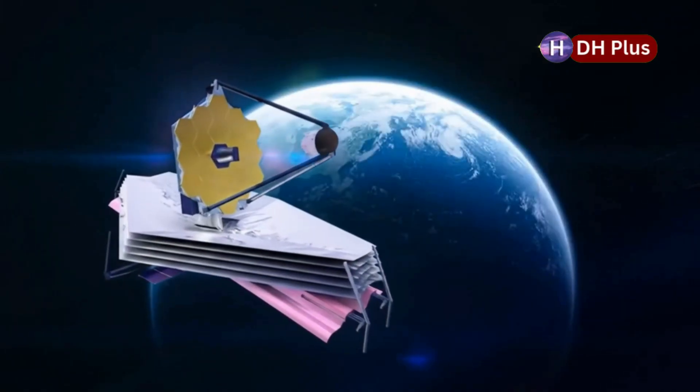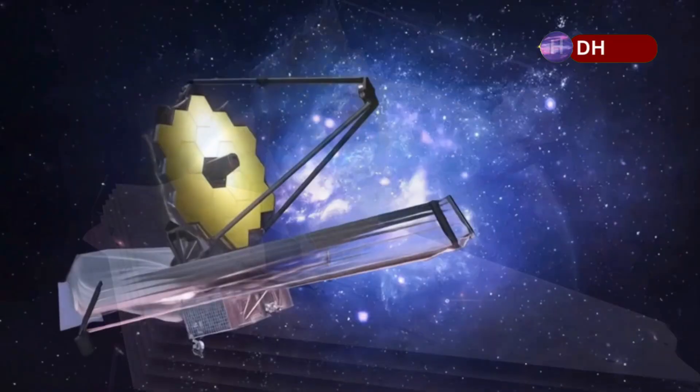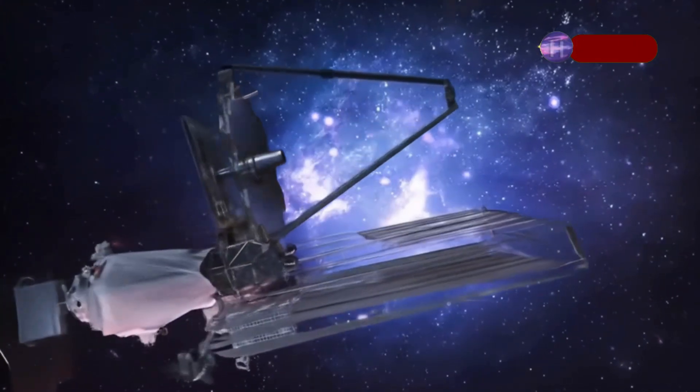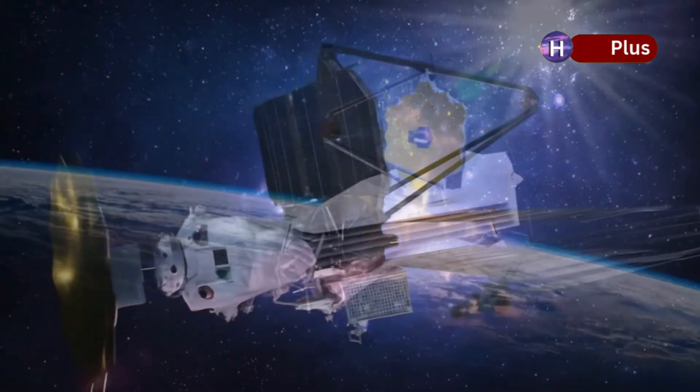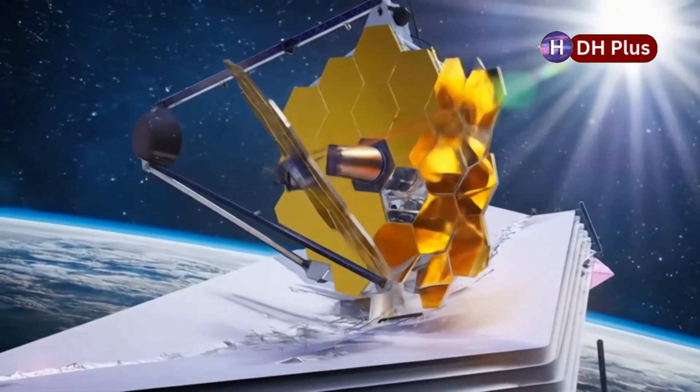Then came JWST. With its massive 6.5 meter mirror, designed specifically to detect infrared light, the kind that ancient galaxies emit. Where Hubble had hinted at the edges of the early universe, Webb shattered the boundaries.